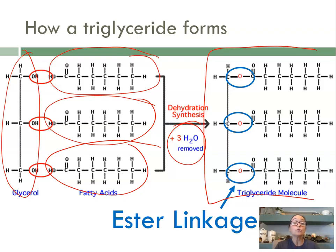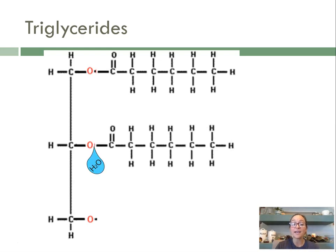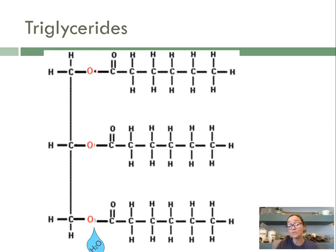The bond that forms when we remove the water is actually called an ester linkage. While proteins in their polypeptides had peptide bonds, and a polysaccharide with carbohydrates had glycosidic linkages, the bonds between a glycerol and a fatty acid is called an ester linkage. It's also made by dehydration synthesis. When you build one triglyceride, you're making or producing three waters. If you were to break and digest a large triglyceride, you would be adding three waters by the process of hydrolysis to break it.